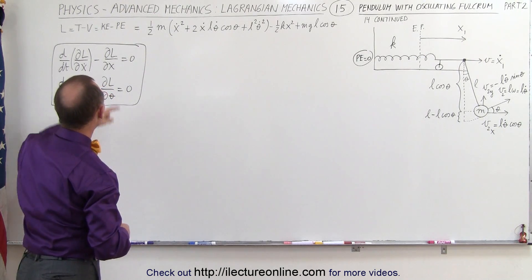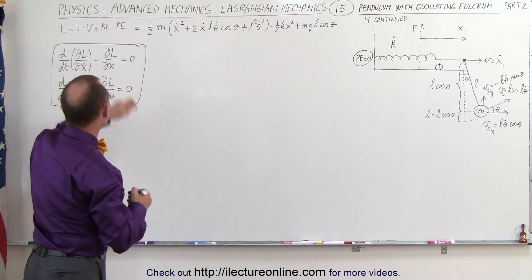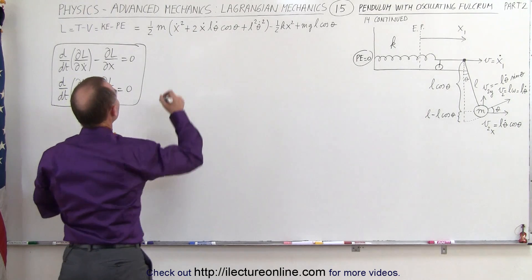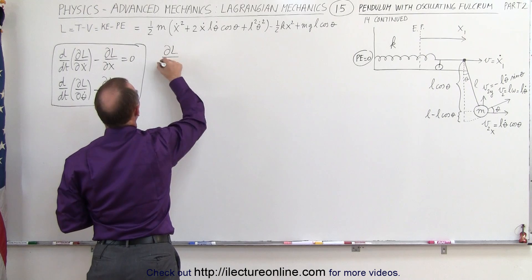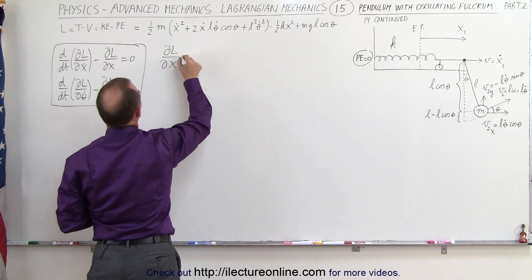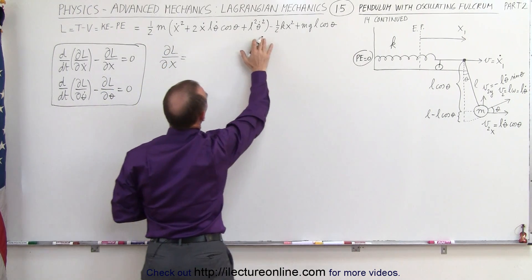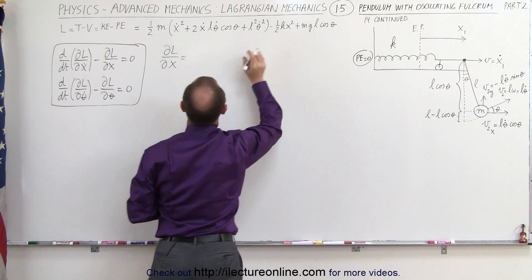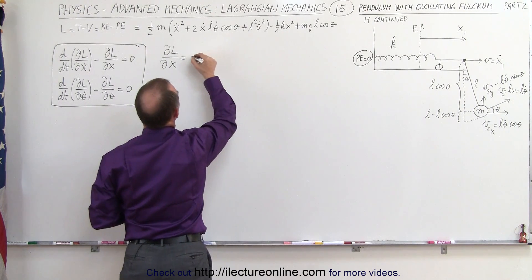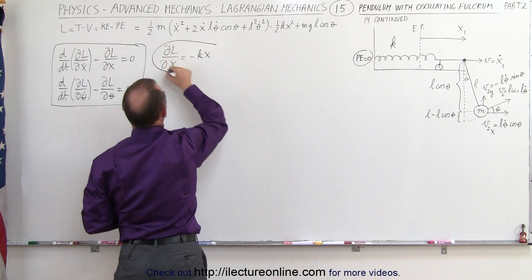What we need to do is find each of these individual components starting with the first one. We take the partial of the Lagrangian with respect to x, and looking at the expression we can see there's only one term with x. This is therefore equal to minus k times x.